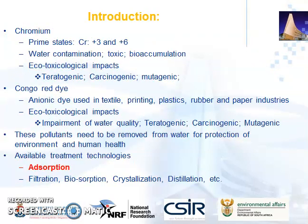Chromium is a heavy metal with prime oxidation states of +3 and +6, of which +6 is the most toxic. Ecotoxicological impacts associated with chromium have been reported to be teratogenic, carcinogenic, and mutagenic. On the other hand, Congo red dye is an anionic dye, mostly used in textile printing and plastic industries, and its ecotoxicological impacts include the impairment of water quality as well as teratogenic, mutagenic, and carcinogenic effects. That is why it is important for these pollutants to be removed from water for the protection of the environment and human health. Some of the studies reported for chromium and Congo red dye removal include adsorption, filtration, and biosorption. This study focused on adsorption as the removal technique.